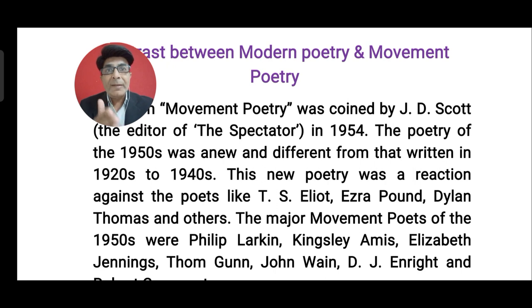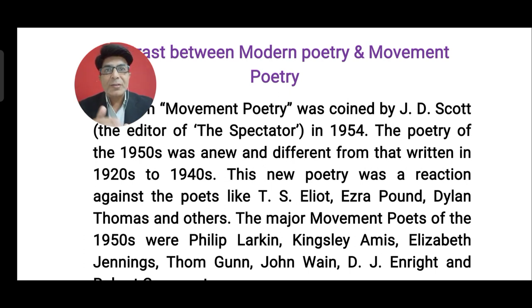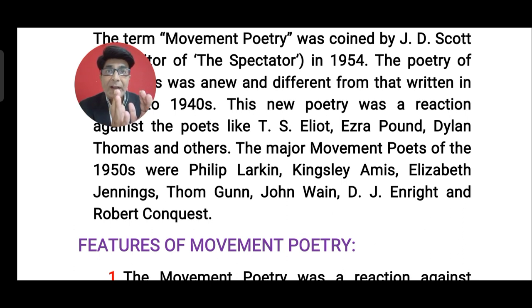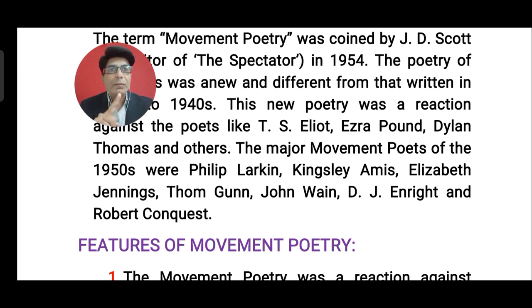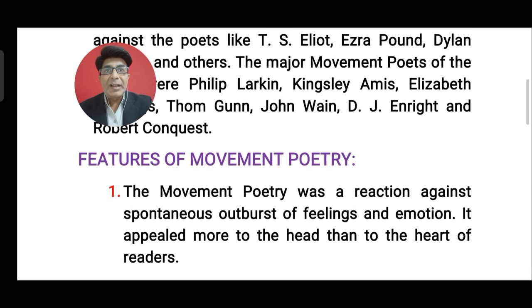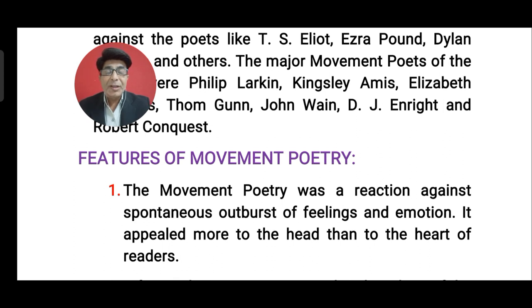The poetry which was becoming popular in 1950s and 60s was in contrast to the poetry written in 1920s and 40s — the era of Ezra Pound, Dylan Thomas, T.S. Eliot, and Sylvia Plath. In the 1950s, other poets reacted against that previous modern poetry. This movement poetry is also known as postmodern poetry, and its important poets include Philip Larkin, Kingsley Amis, Elizabeth Jennings, Thom Gunn, John Wain, D.J. Enright, and Robert Conquest. These poets formed a group known as the movement poets.